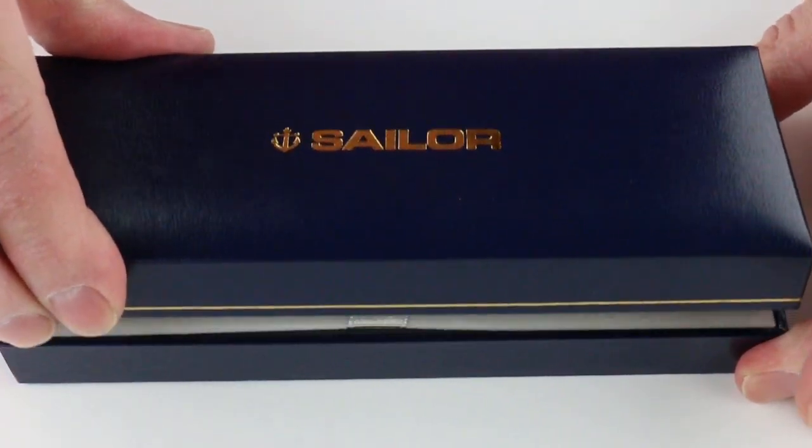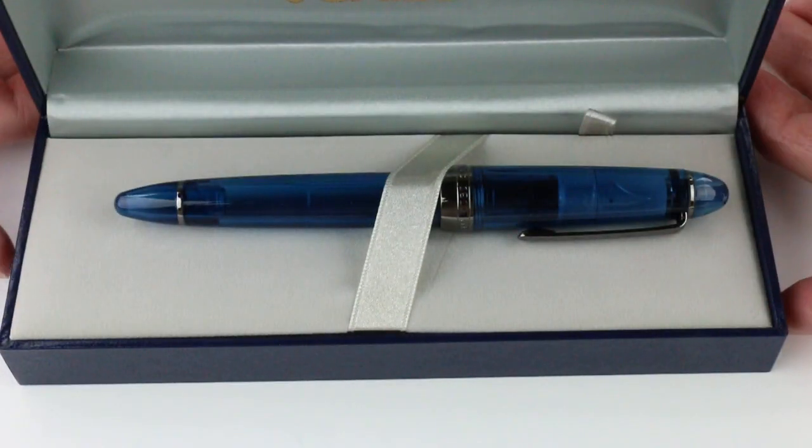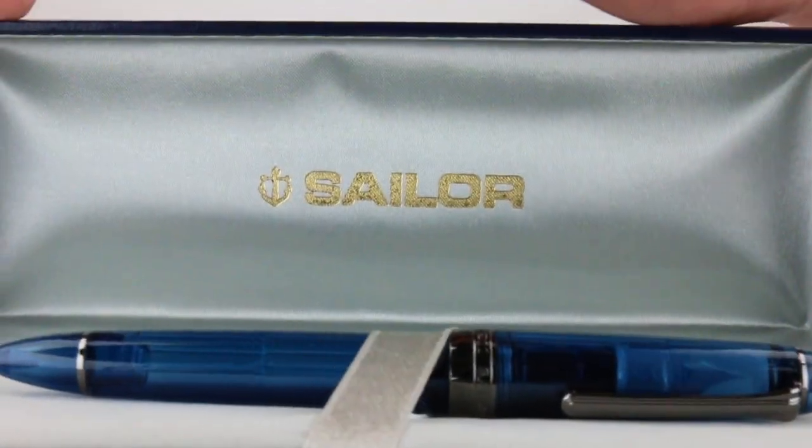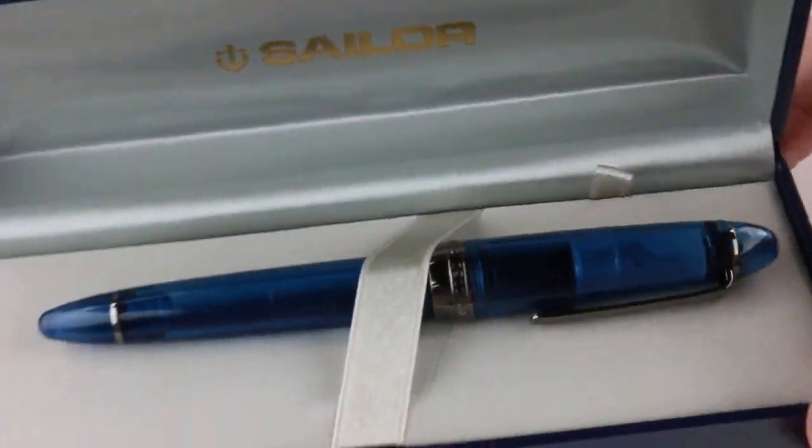Hinge style lid on the box. It lifts open. It has a gray interior with a satin underside of the box lid with Sailor embossed in gold once again.